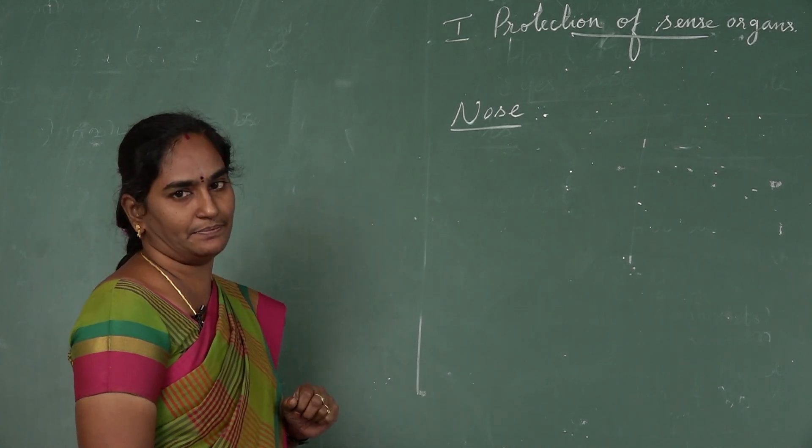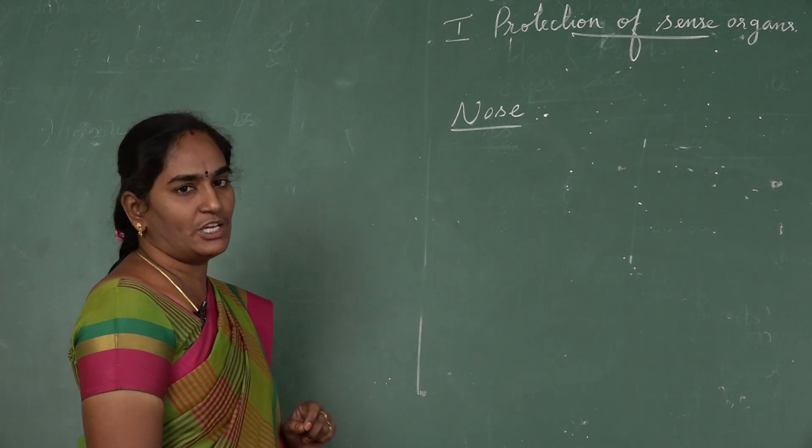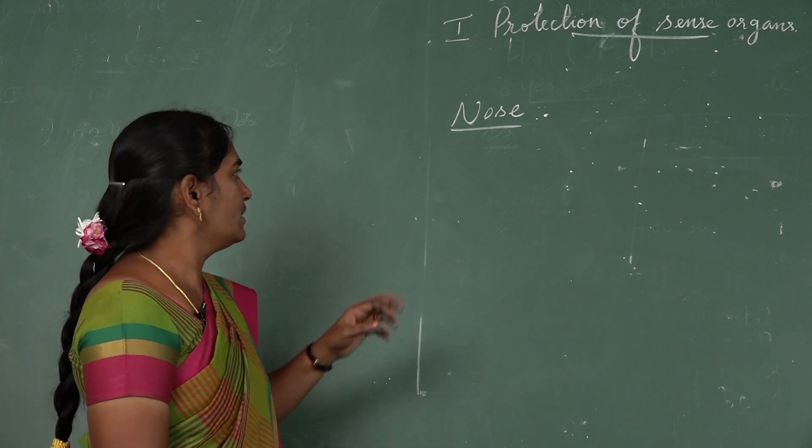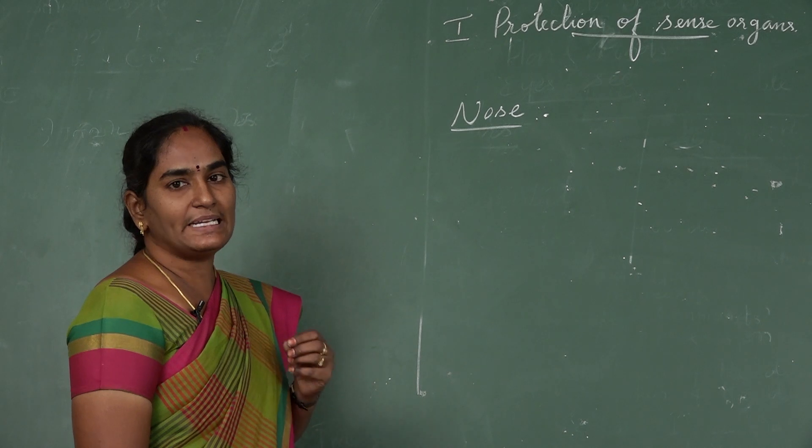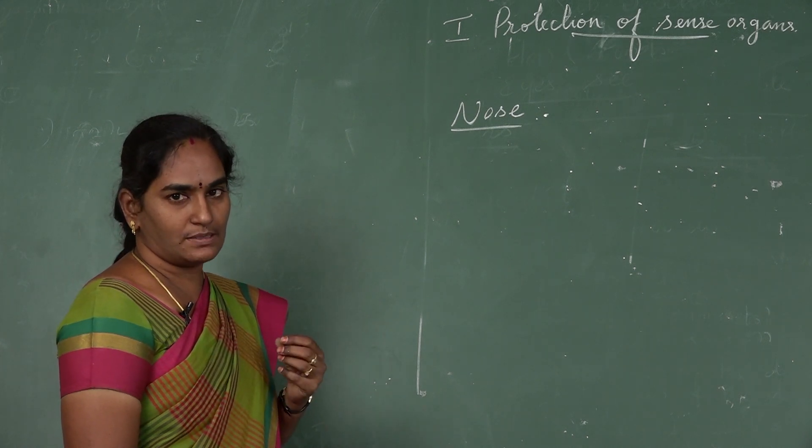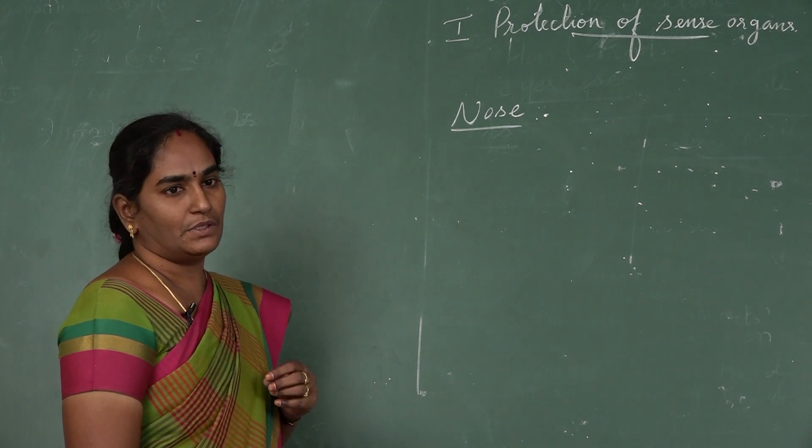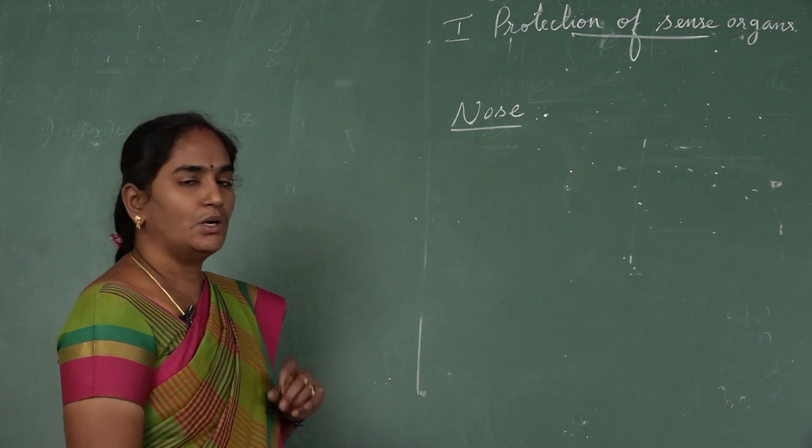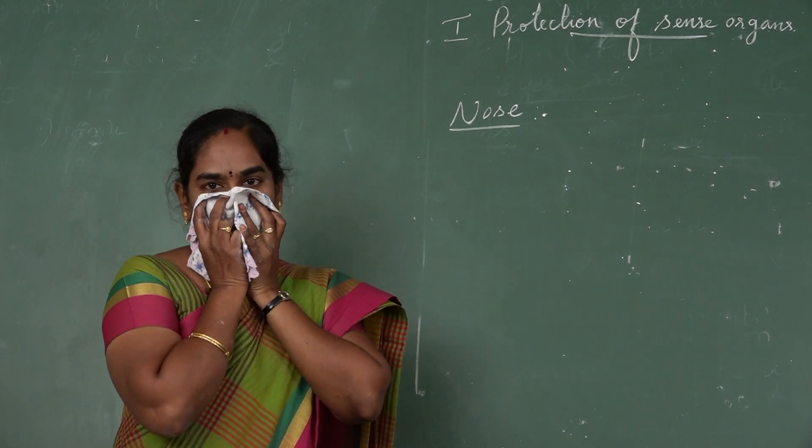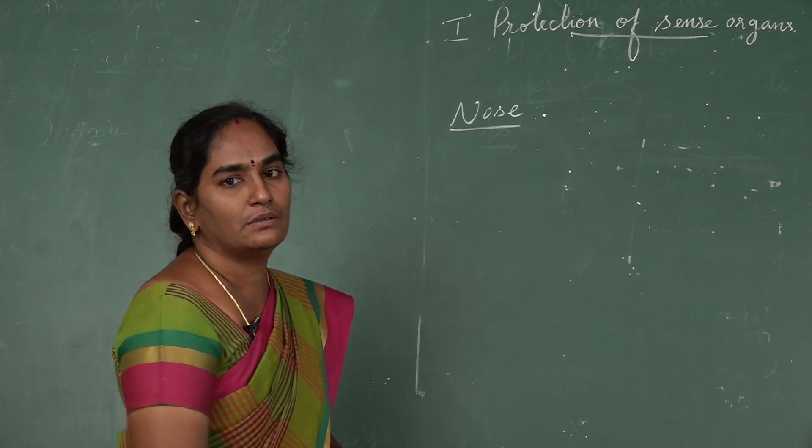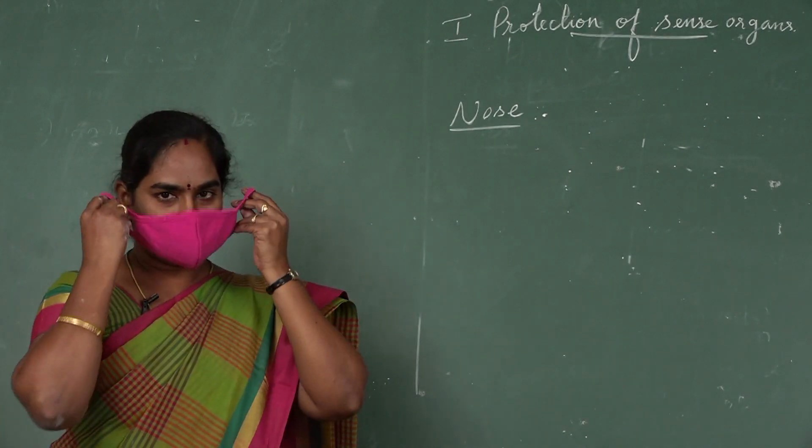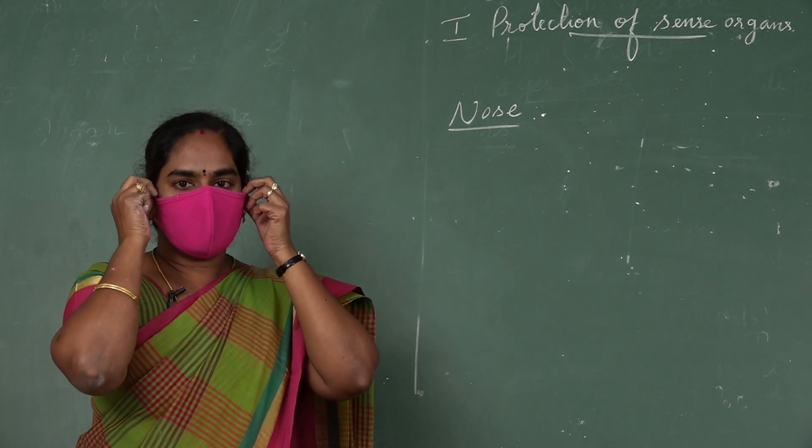Next sense organ is nose. Nose helps us to smell and breathe. How to protect the nose? By nature, hair present inside our nose helps to filter the dust when we breathe in. Don't clean your nose by inserting any foreign objects. When your nose is blocked because of cold, it's better to steam to clear it. Don't pick your nose. When you sneeze or cough, you must use the handkerchief to cover your nose and mouth because it helps to prevent the spread of diseases. You want to use the mask. This helps to prevent the Covid-19 virus.